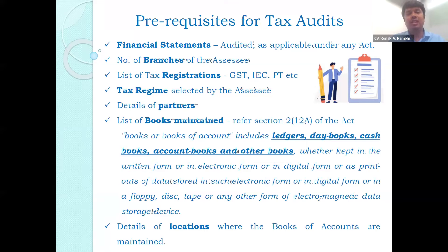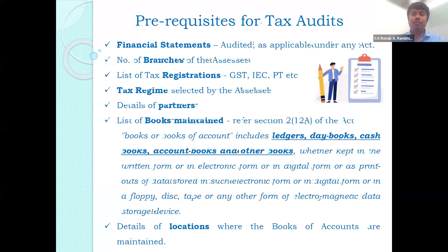The list of tax registrations of the assessee should be collected, which would include GST registration, Import Export Code, PTE, etc. The auditor has to collect which tax regime the assessee is going to opt for, as that is to be mentioned in the tax audit report. In case of partnership firms, details of partners need to be mentioned, including any addition, deletion, or modification.